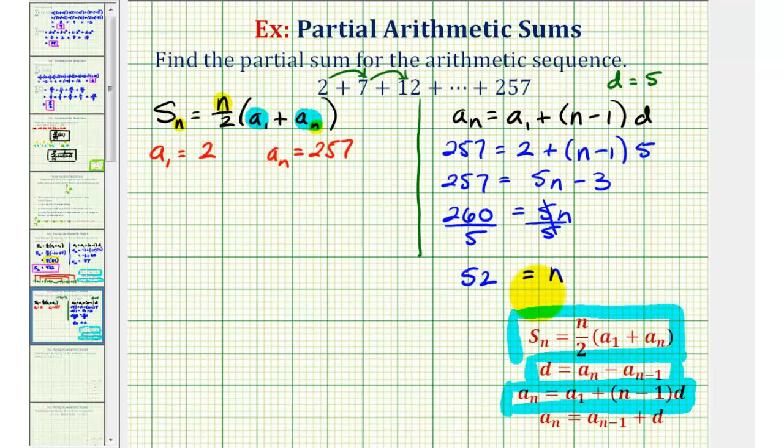So now we have everything we need in order to find our partial sum. S sub 52, our partial sum is going to be equal to n divided by two, or 52 divided by two,